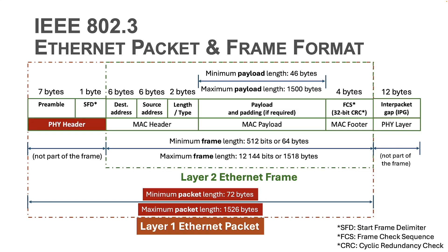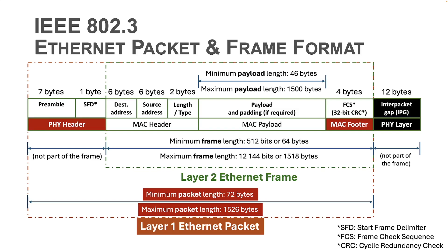An Ethernet packet starts first with the physical layer header and it ends with the MAC footer of the Ethernet frame. Finally, between subsequent Ethernet packets there is an idle time that is called inter-packet gap or IPG.